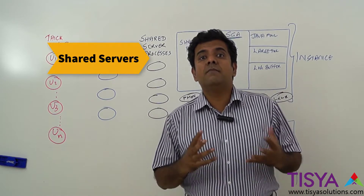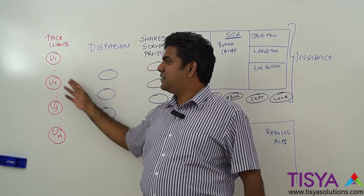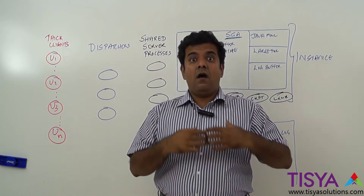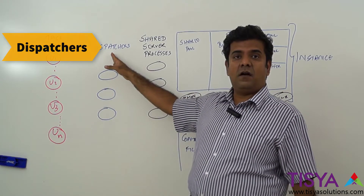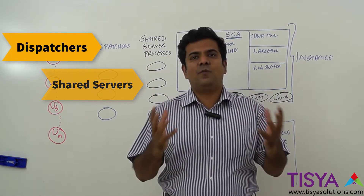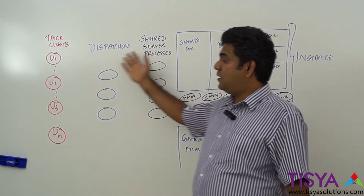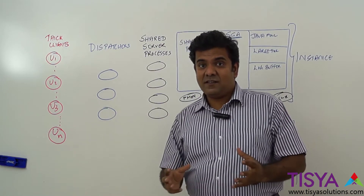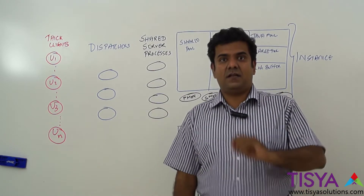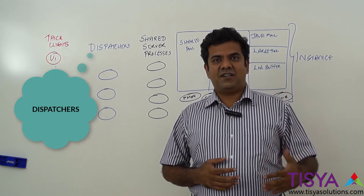Instead of creating a dedicated server for each user who connects, we pre-create two components: one called dispatchers and another called shared servers. They are also processes, just like PMON, SMON, and DB Writer are background processes. We group a bunch of processes as dispatchers and another bunch as shared server processes. There are parameters in the database called dispatchers and shared_servers through which you can configure them.